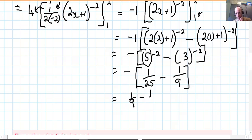And we multiply all that by negative 1, which means we have a positive 1/9, we have a negative 1/25. So you have a 9th take a 25th, which is 16 over 225.